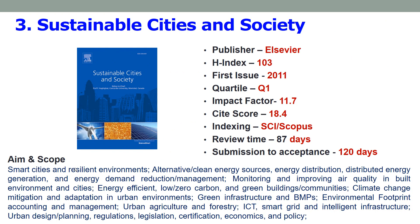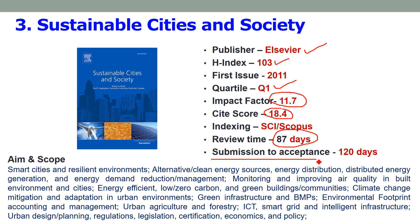Third is Sustainable Cities and Society, launched recently in 2011. Its impact factor has increased tremendously in previous few years to 11.7, with a site score of 18.4. The journal is published by Elsevier with an H-index of 103. It is a Quartile 1 journal with both SCI and Scopus indexing. The review time is 87 days, meaning within 3 months you will get your review comments. Submission to acceptance will be 128 days, so within about 4 months your paper will get published if accepted.